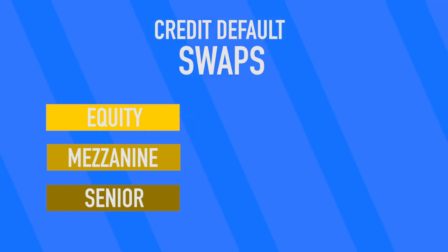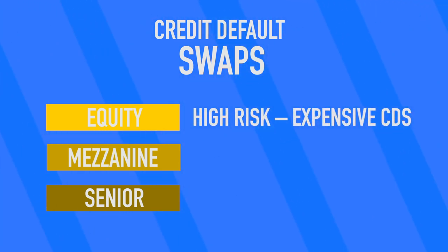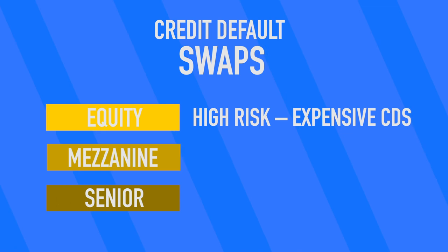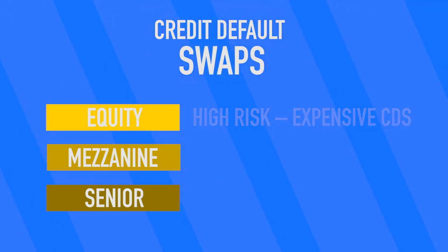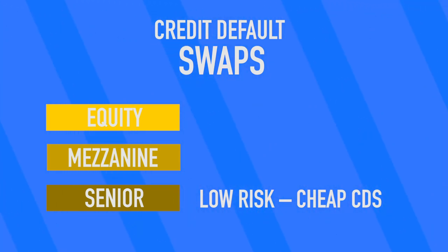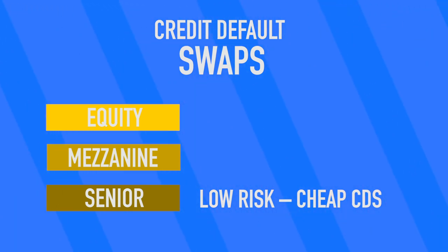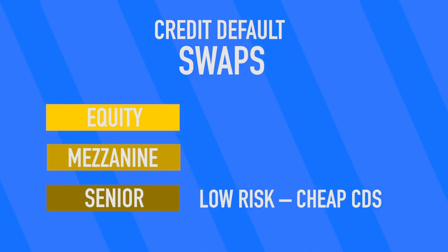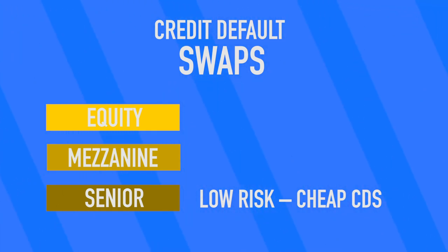For example, equity tranches are high risk, which would make the credit default swap for this level pretty expensive, and the swap itself would only pay out relatively a little — basically just enough to cover the losses and lessen the blow. For the senior tranche, credit default swaps would be cheap. Since credit default swaps are bets that the market will fail, that's pretty unlikely for the senior tranche, so they don't have to be that expensive. That said, it also means they have a very high rate of return when this does happen — why would investors buy the credit default swap if it didn't pay out a ton, since for the senior tranche it was unlikely to pay out at all? Basically, credit default swaps are just insurance on a stock, just like insurance on a car.